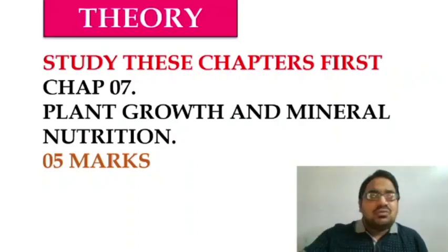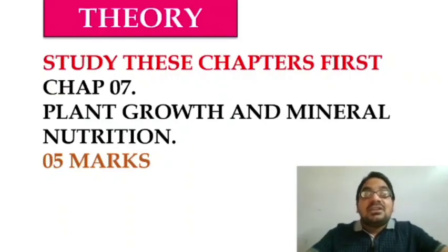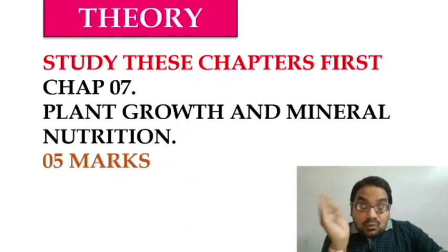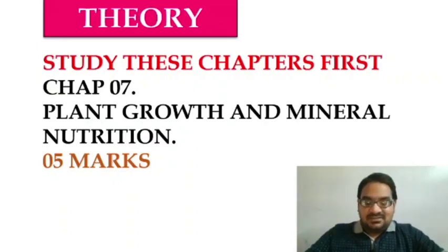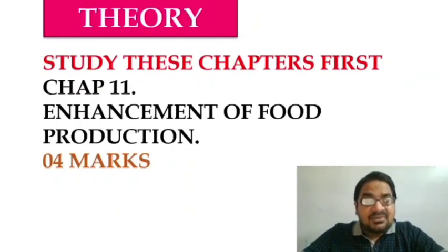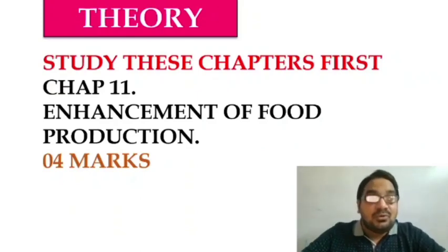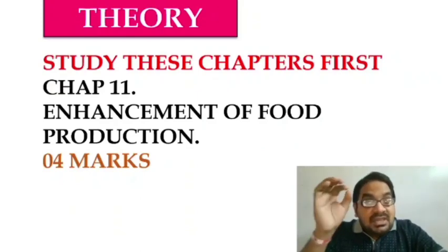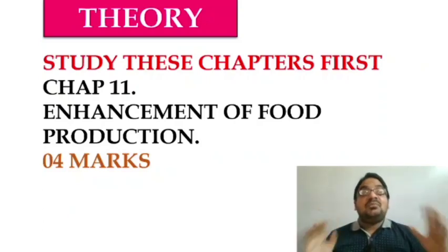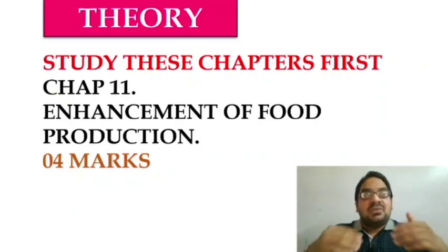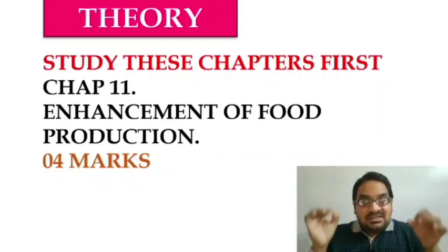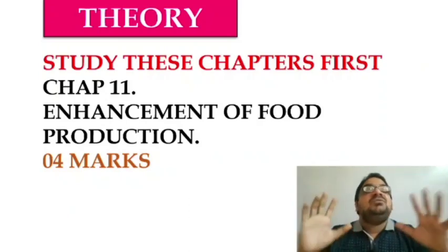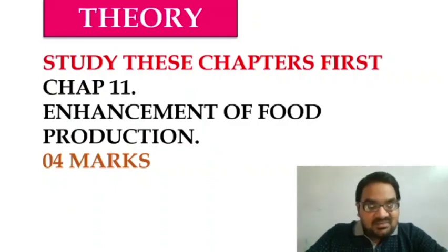You will be able to write 14 marks. Without option you can write 14 marks. So smart learning. Then you have a very good chapter which is Chapter number 11 Enhancement of Food Production. This special chapter is for 4 marks. What you have to do in this chapter specially is remember scientific naming, samples and you will easily get 4 marks.